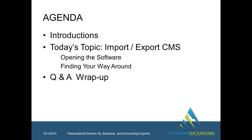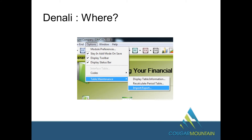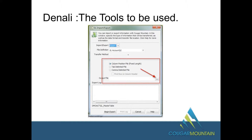We will have a Q&A wrap-up so you can ask any questions. First of all, where is import/export? It's in every module. No matter what the module — whether it be General Ledger, AP, or AR — you will find all your import/exports under Options, then Table Maintenance, then Import/Export. There are other places too, and towards the end I'll take you on a tour of where other import/exports are.